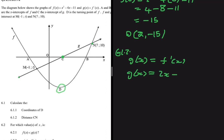If you have no idea what's going on, I advise you to go watch a video on differentiation on the channel. But that's not the only way to solve this problem — you can actually find the y value of M, giving you two points M and N on the line, and from there find the equation.